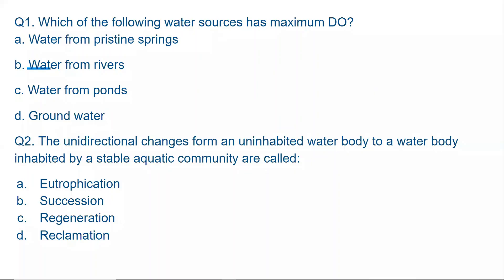Question number one: Which of the following water sources has maximum dissolved oxygen (DO)? A. Water sources from pristine springs. B. Water from rivers. C. Water from ponds. Or D. Groundwater.